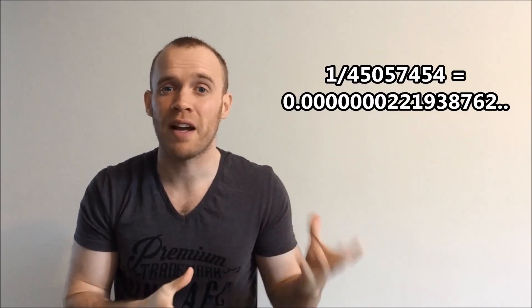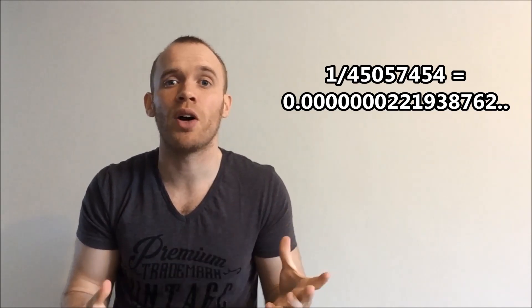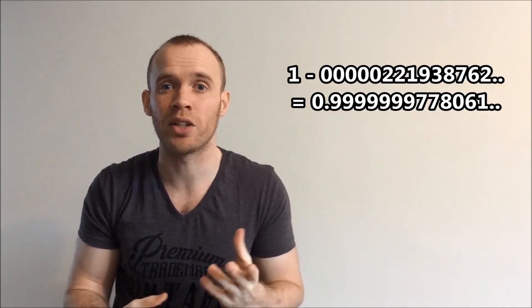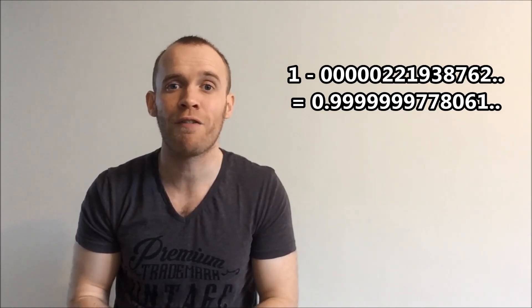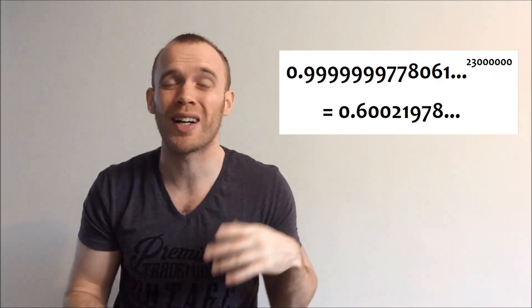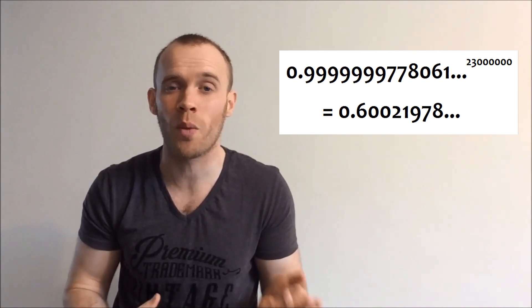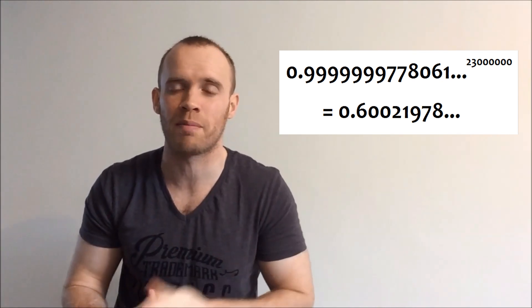So let's do the same with the jackpot. One in 45 million is this very small decimal here, and we're going to do one minus it to give you the odds of not winning the jackpot in a single draw. Now, how many times do we have to multiply that by itself before we get below 0.5? Let's try halfway. We'll call it 23 million. So if you play 23 million times, you've got a 60% chance of not winning the jackpot. Therefore, you've got a 40% chance of winning the jackpot.